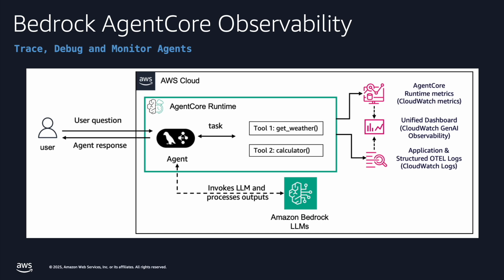While observability features are currently in an early stage of maturity, they already provide essential insights into agent performance, execution times, and component interactions out of the box. The system automatically captures and streams telemetry data to CloudWatch when using AgentCore capabilities like runtime, eliminating the need for additional monitoring infrastructure.